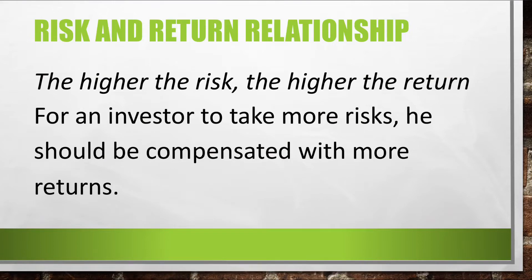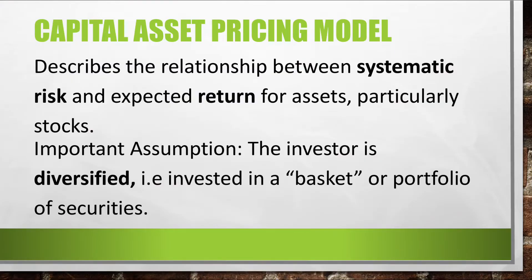Now, let us talk about the relationship between risk and returns. We all know the phrase: the higher the risk, the higher the return. For an investor to take more risk, he should be compensated with more returns. Assuming that for a perfectly safe investment you are willing to take that investment for a rate of return of 5%, if we introduce the chance that you are going to lose, you will no longer be motivated to take that investment if it offers the same rate of return. You need to be compensated with more returns, say 7% or 10%, for you to be motivated. This is where the Capital Asset Pricing Model comes in — it describes the relationship between systematic risk and expected return for assets, particularly stocks.